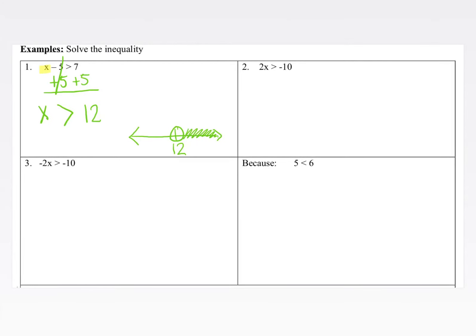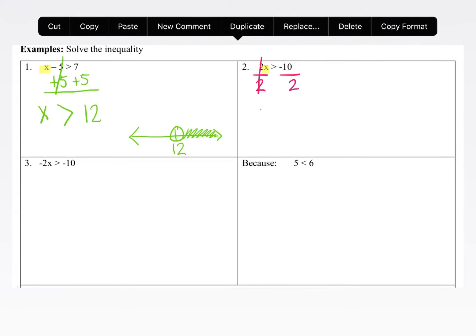In our next example, we have 2x is greater than negative 10. So again, we want to isolate that x. It's tied to the 2 via multiplication. So we're going to look at the inverse, which is division. Divide both sides by positive 2. And what we do to one side, we have to do the other. On the left-hand side, 2 divided by 2 reduces to 1x, so we're just left with x.